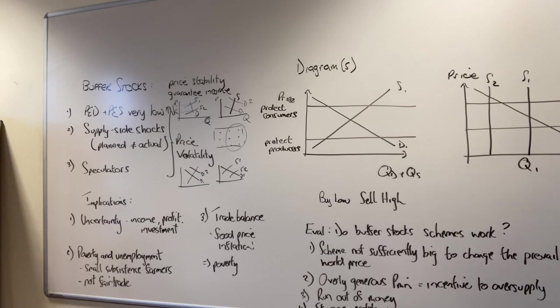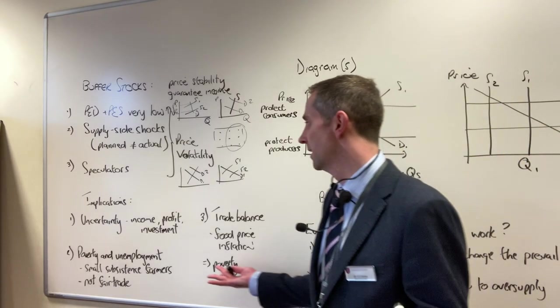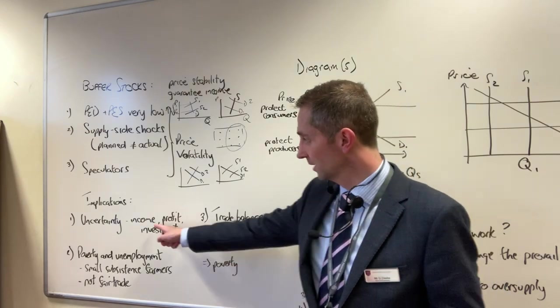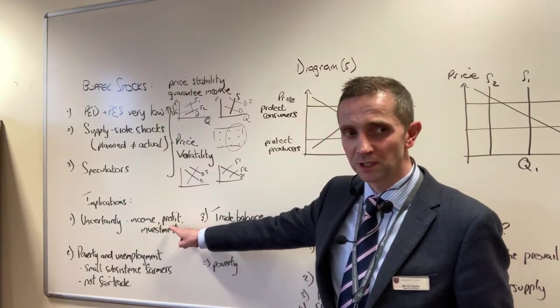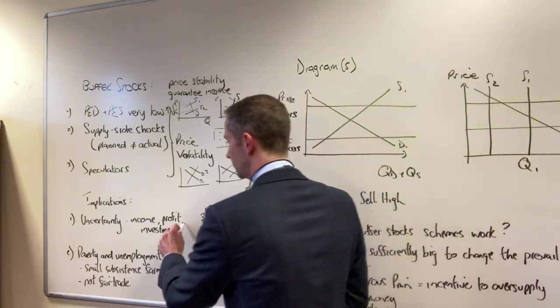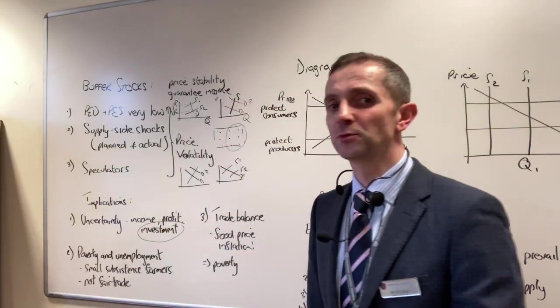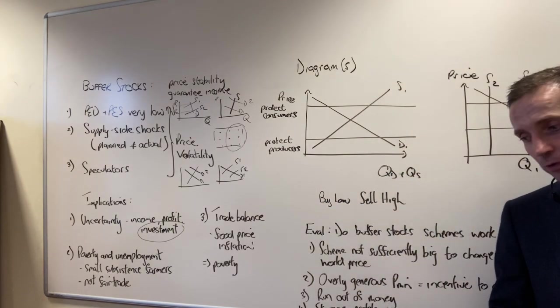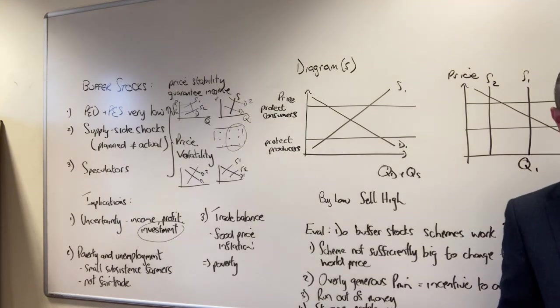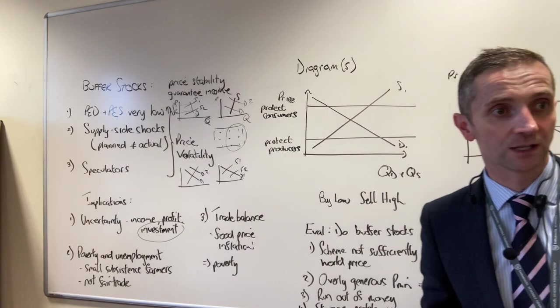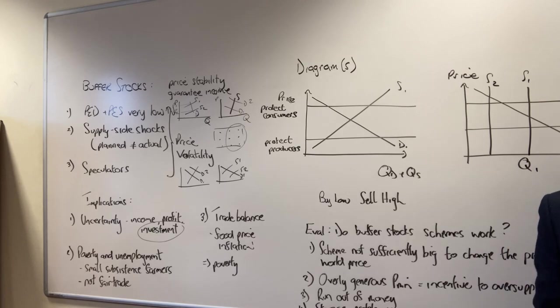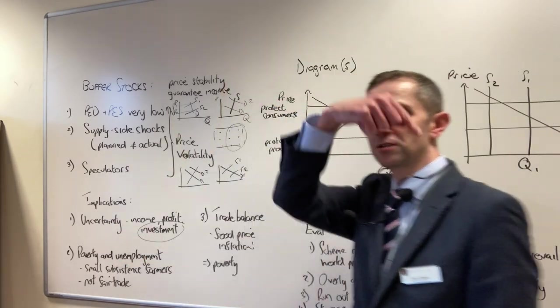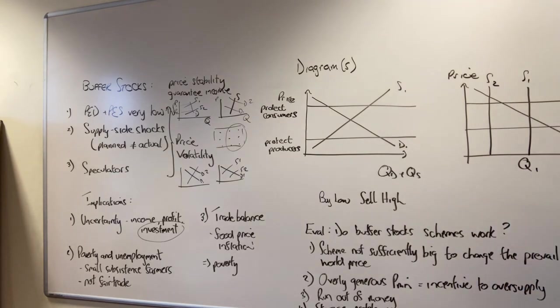Right. Implications then. If you are in this country and the incomes are very uncertain, your income's uncertain, you're not going to be too sure how much profit you're going to make. But more important than that, the developed world, what do they use in farms? What do they sit in? Tractors. Tractors and machinery. But what, you know, it drives along and the corn or whatever is fired out of the back of it automatically. Combine harvesters, right.